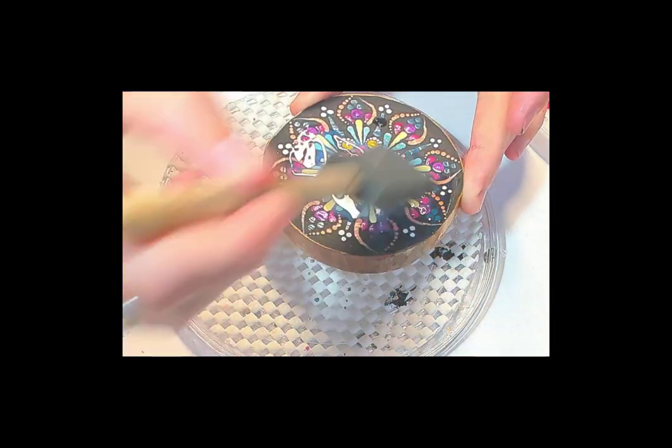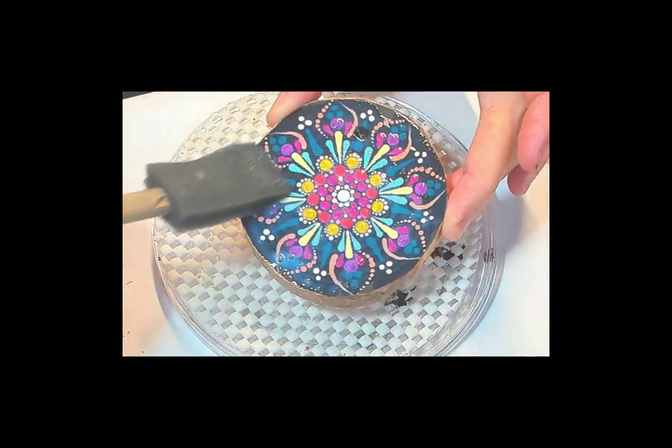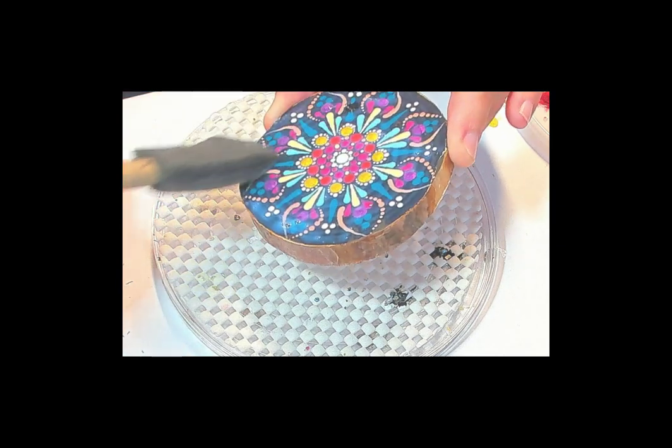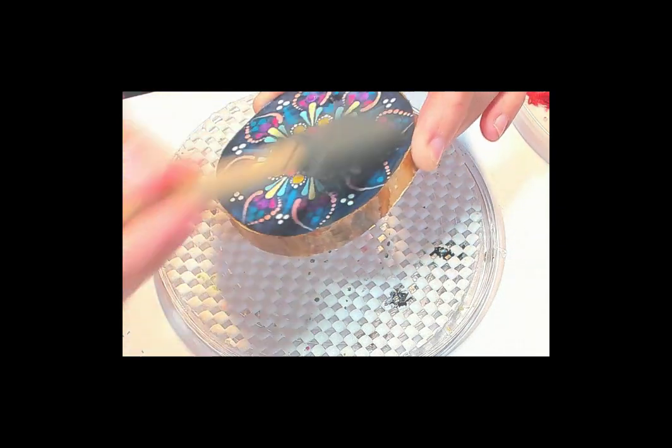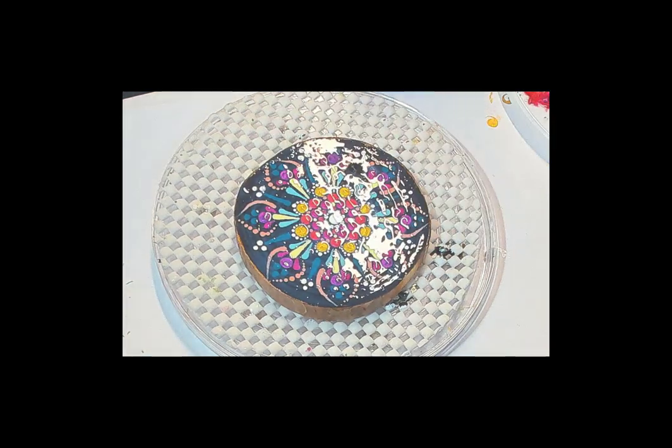And you want to use just a sponge brush and put it on quick. See how fast I'm doing this? You don't want to overwork it at all because the more you work it, it's going to start to get tacky and cloudy. You just want to do it as fast as you can. Get out the bubbles quick and then leave it flat to dry.